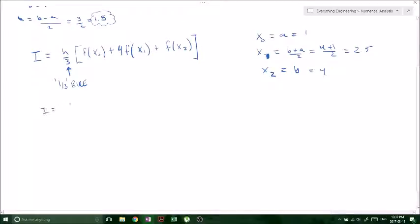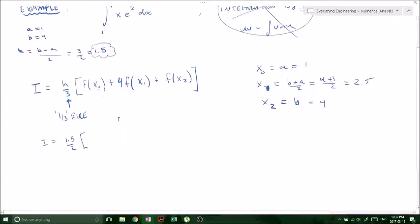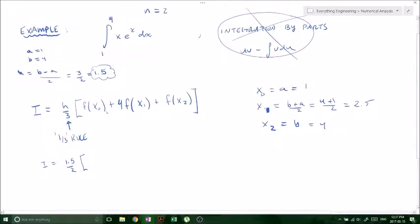Our function remember was x times e to the x, right? So f of x naught, 1 e to the 1 plus 4 times x1. Remember x1 was 2.5, so we have 2.5 e to the 2.5, all times 4 because we have our formula, remember that.